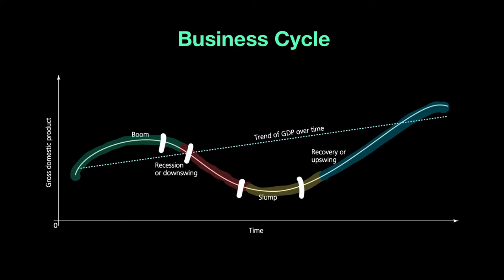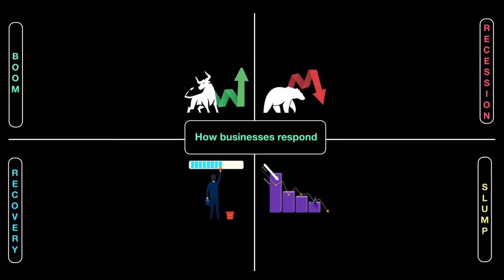In a couple of videos later we will be discussing those policies in great detail. When those policy decisions are taken, there are changes in the economy — things you're allowed to do and things you're not. As a result, businesses have to respond to changes that impact all businesses to some extent. We'll look at each phase in sequence — boom, recession, slump, and recovery — to see what changes are taking place and how businesses are responding.